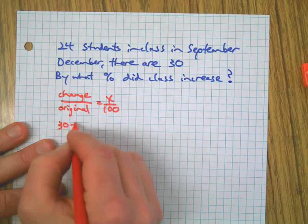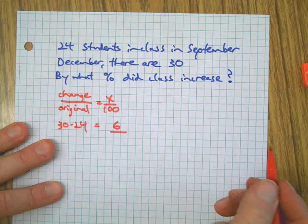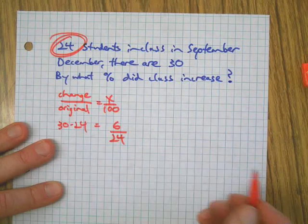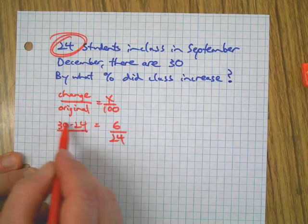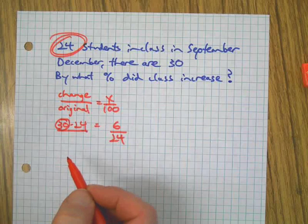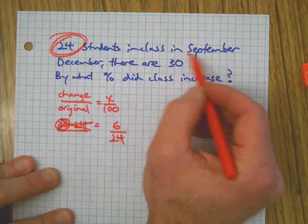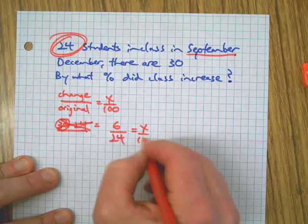The change is 30 minus 24 which is six. The original is 24. Some people when you're calculating change would automatically go, there's my original because that's what I subtracted from. But sometimes things go up, sometimes things go down. You got to keep track. There's the original, it was in September.